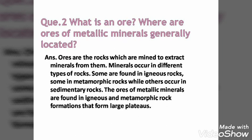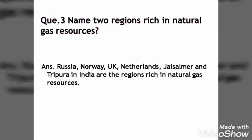Moving to the third question: name the regions which are rich in natural gas resources. The major areas where natural gas resources are located are Russia, Norway, UK, and the Netherlands. In India, it is found in Jaisalmer and Tripura. These are the regions rich in natural gas resources, which we covered in the distribution of resources.